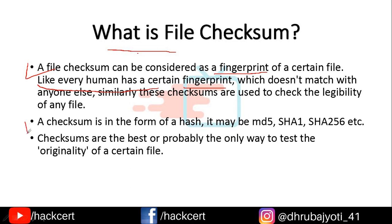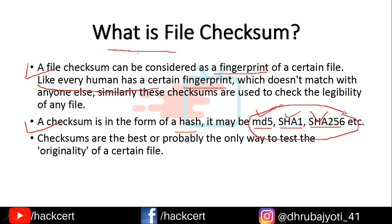A checksum can be in the form of a hash. It is generally in the form of a hash and it may be MD5, SHA1, SHA256, or any one of the hashes that are available. Generally, you will find either MD5, SHA1, or SHA256 — one of those three.